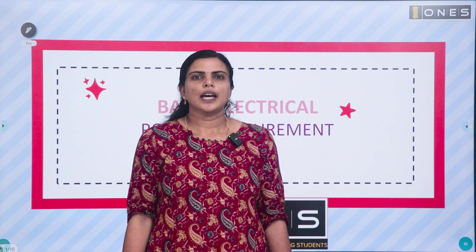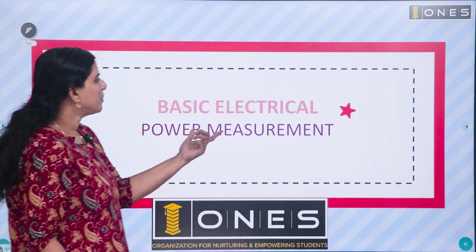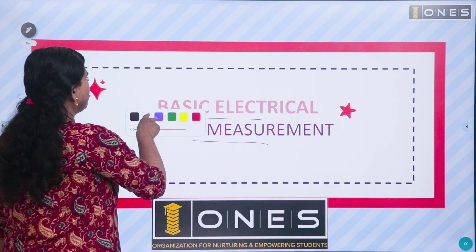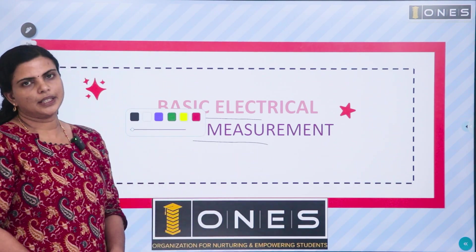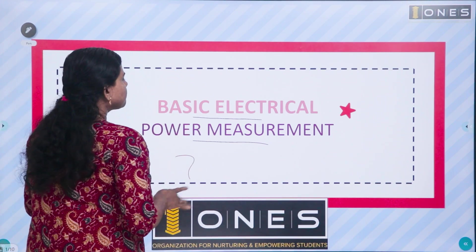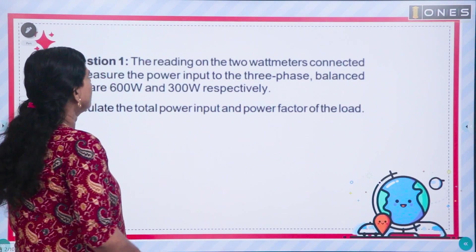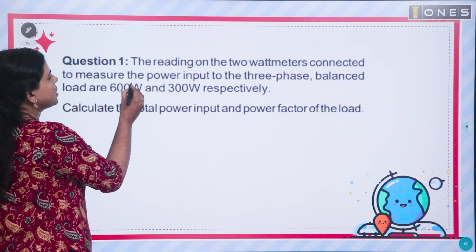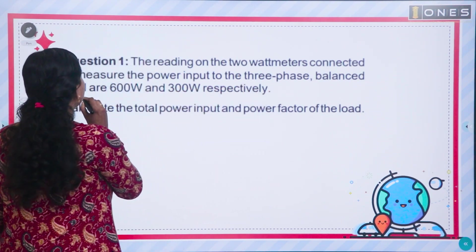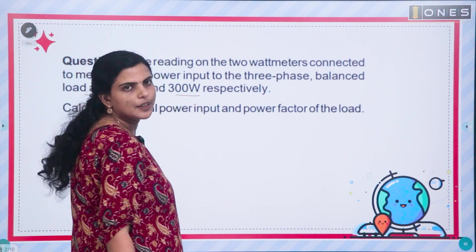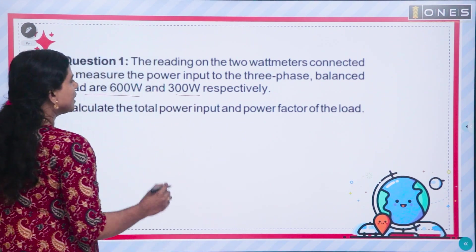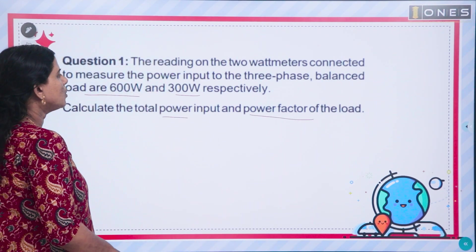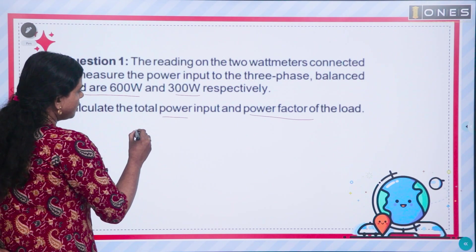Welcome to the session on power measurement by two wattmeter method problems. The first question: two watt meters connected to measure the power input to a three-phase balanced load are reading 600 watts and 300 watts respectively. Calculate the total power input and power factor of the load.